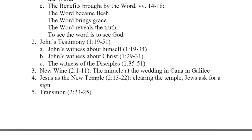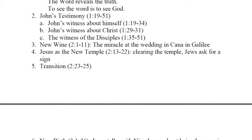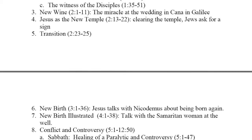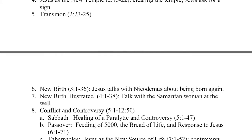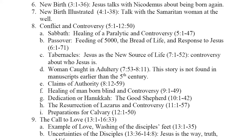In chapter 2, Jesus performs a miracle at a wedding in Cana in Galilee, turning water into wine. Jesus shows Himself as the new temple: in chapter 2, verses 13 to 22, He clears the temple and the Jews ask for a sign. Chapter 3 has the theme of new birth — Jesus talks with Nicodemus about being born again. New birth is illustrated in chapter 4, when Jesus talks with a Samaritan woman at the well, and this woman believes and her life is changed.